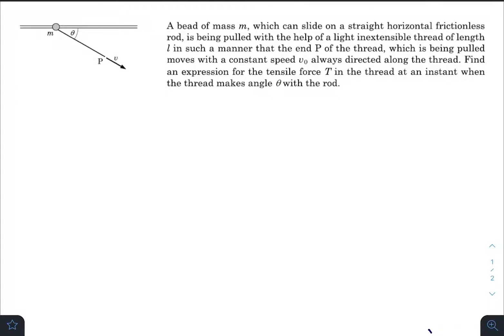In today's question, a bead of mass M which can slide on a straight horizontal frictionless rod is being pulled with the help of a light inextensible thread of length L in such a manner that the end P of the thread, which is being pulled, moves with a constant speed V0 always directed along the thread.